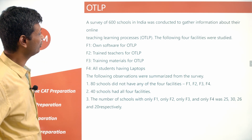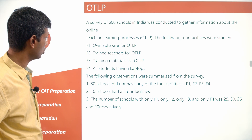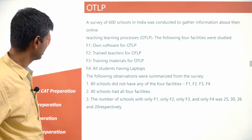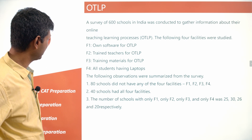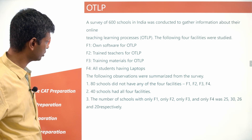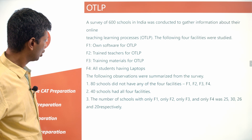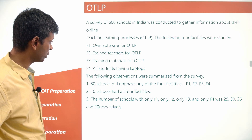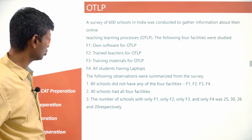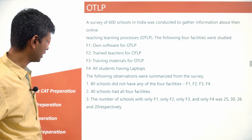The following four facilities were studied: F1 — owned software for OTLP; F2 — trained teachers for OTLP; F3 — training materials for OTLP; F4 — all students having laptops. From the survey observations: 80 schools did not have any of the four facilities, and 40 had all four.